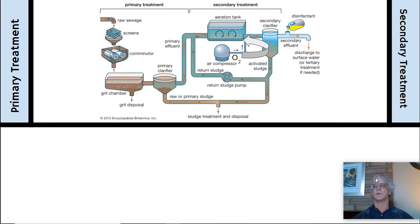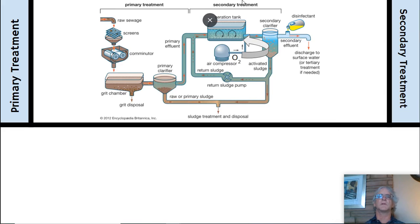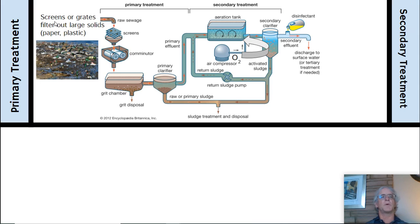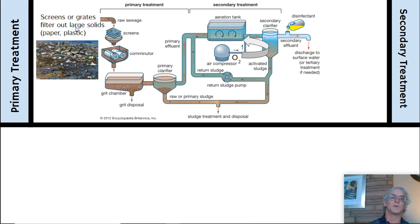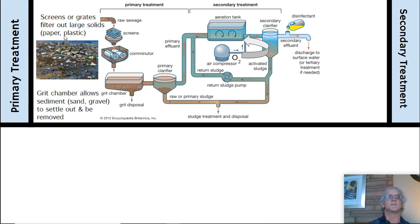Looking at the diagram, this is primary and this is secondary. Primary has screens or grates that filter out large things like paper, plastic, and all other kinds of things. The Hyperion wastewater treatment plant, which is near LAX, has had things such as motorcycle frames and a telephone pole go into their treatment plant — fortunately they had the grates to stop them. There's then a grit chamber that allows sediments such as sand or gravel to settle out, and typically these chambers are fairly large with water moving slowly through them.